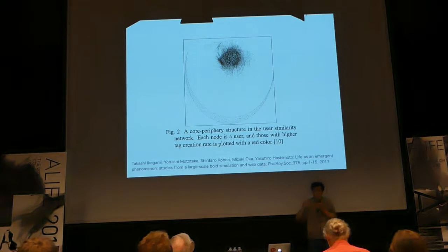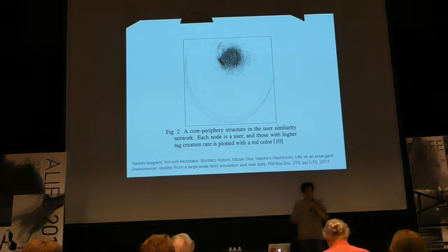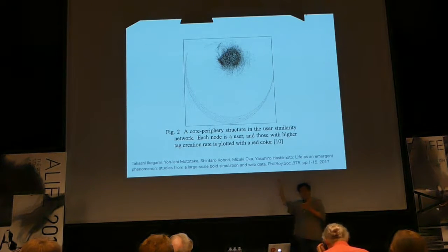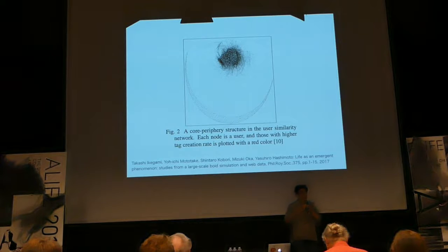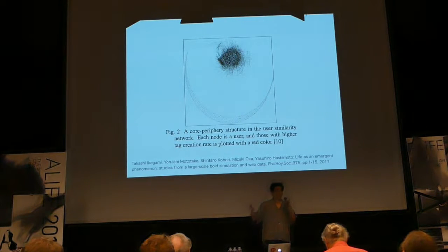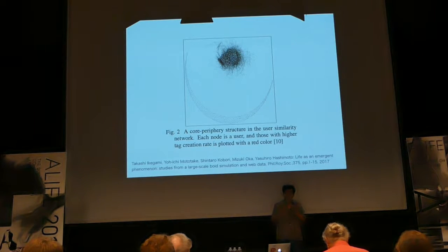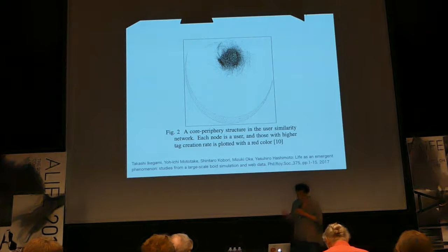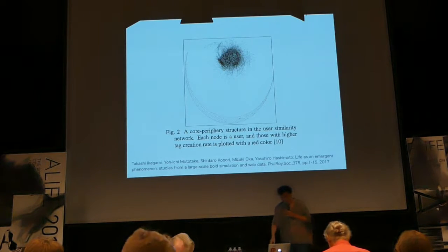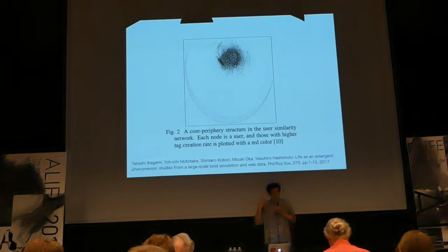We found that similar users are creating more new tags. People might think that a heterogeneous community creates more novel tags, but this data shows that similar users make clusters and they are creating new tags. So if you want to make new ideas, maybe you need homogenous researchers who tend to compete with each other and create new tags. At least from this data analysis, homogenous clusters tend to generate more new tags than heterogeneous clusters.